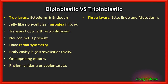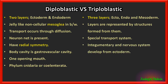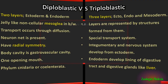Among triploblasts there are three layers: ectoderm, endoderm, and mesoderm. A special transport system is present, and the integumentary and nervous systems develop from ectoderm. Endoderm develops the lining of the digestive tract. A very important point: the digestive gland liver is developed from endoderm in triploblasts.